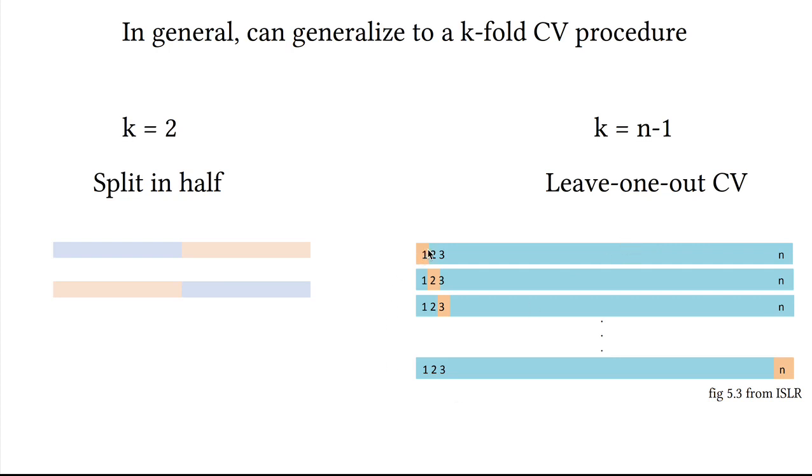Because we basically train our model on every single observation except one, and then we see how well it performs to predict one observation at a time, and so on.